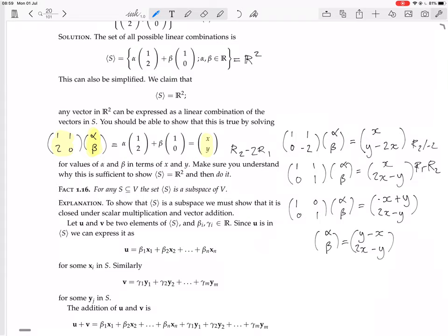So that matrix on the left, that's just the identity matrix, so this whole thing is just saying that [alpha; beta] is equal to, I'll write it now, [y minus x; 2x minus y]. So it's saying that if you want to get the vector (x,y) as a linear combination of the vectors (1,2) and (1,0), then you must just make alpha y minus x, and you make beta 2x minus y, and then you get the (x,y) that you want to get.